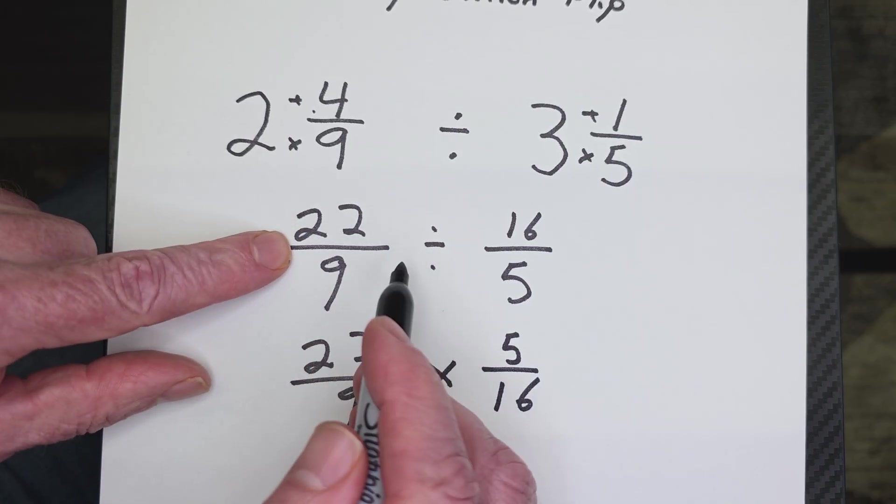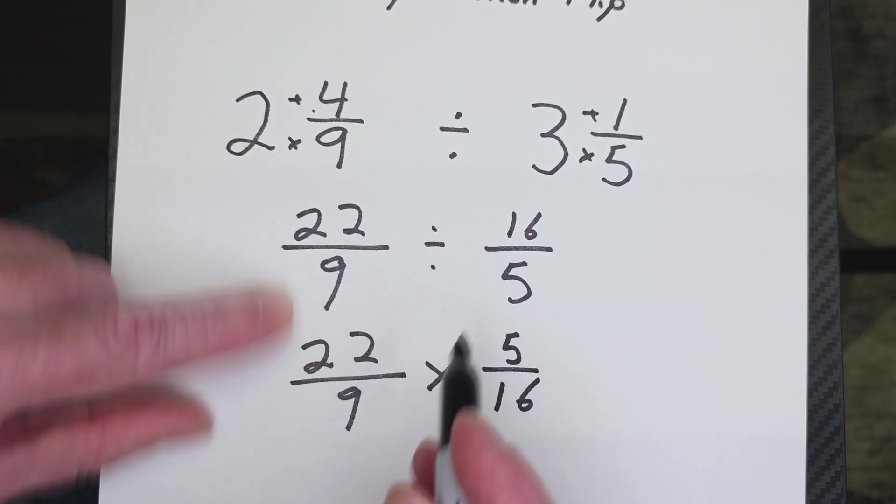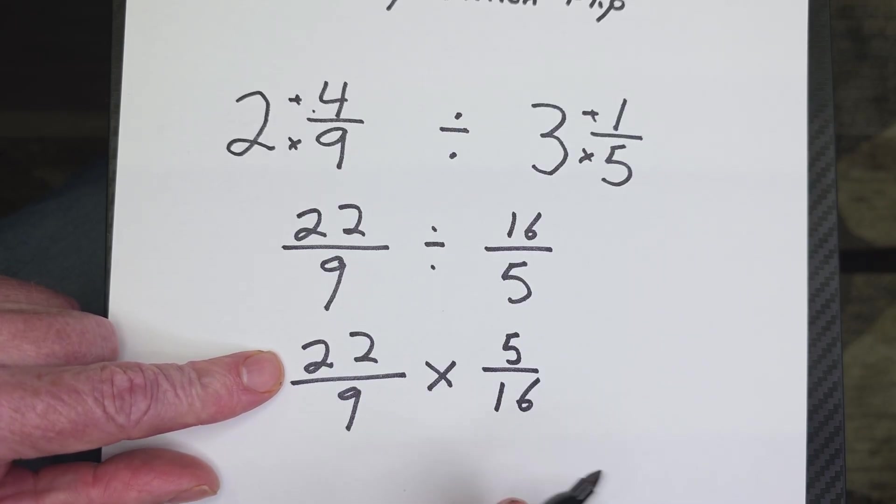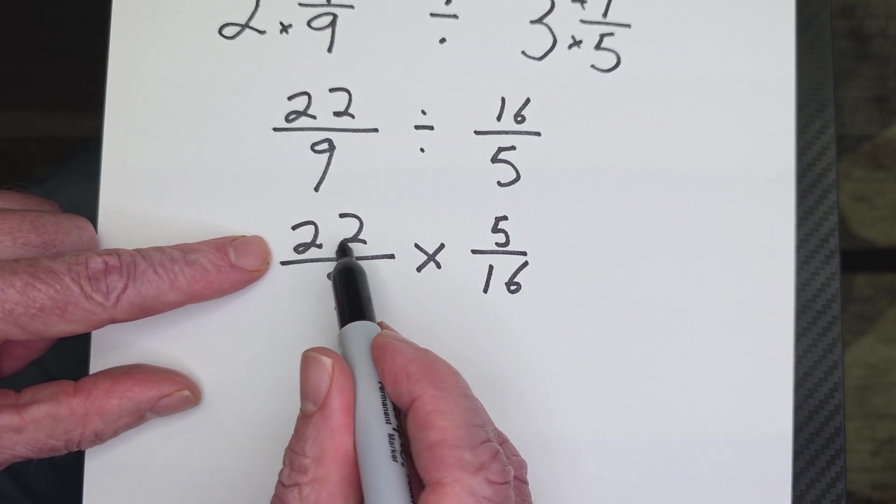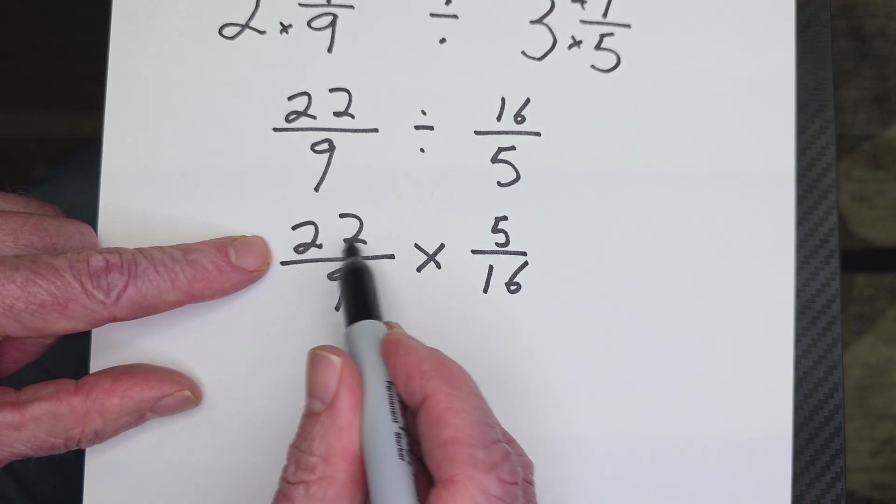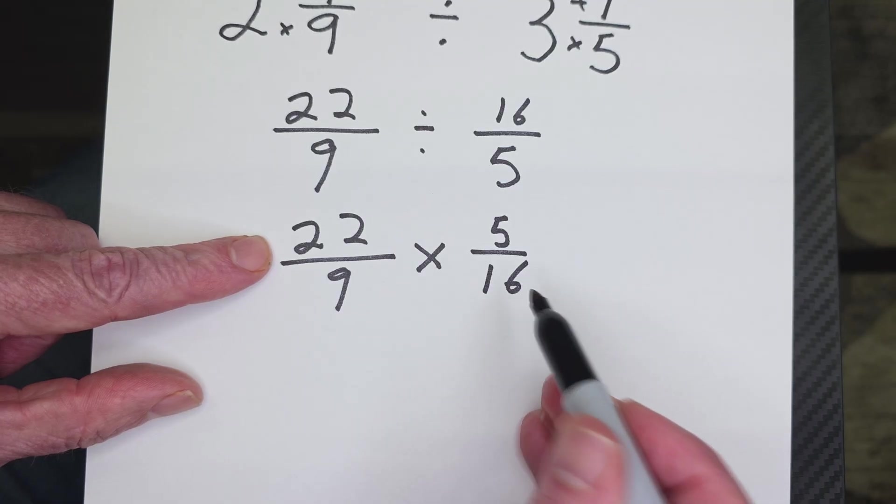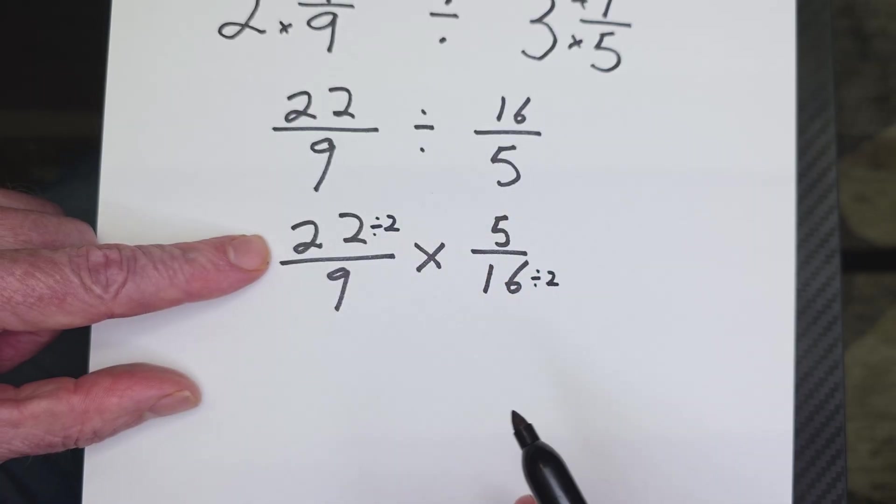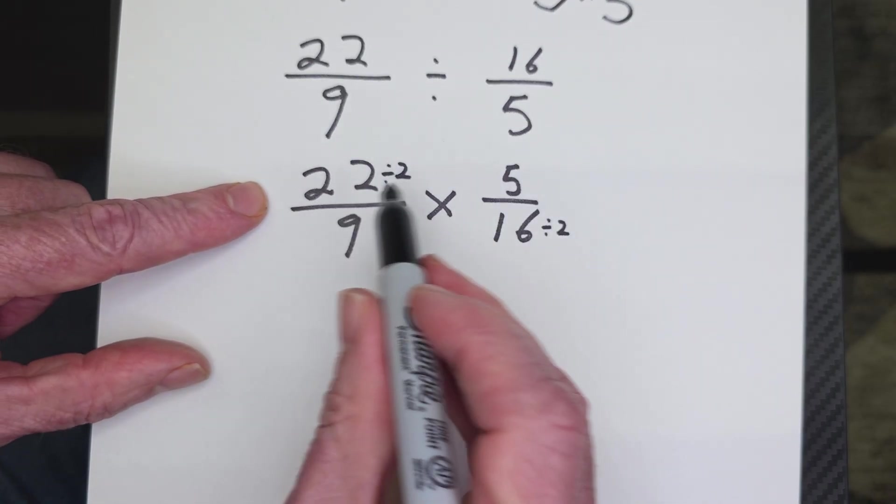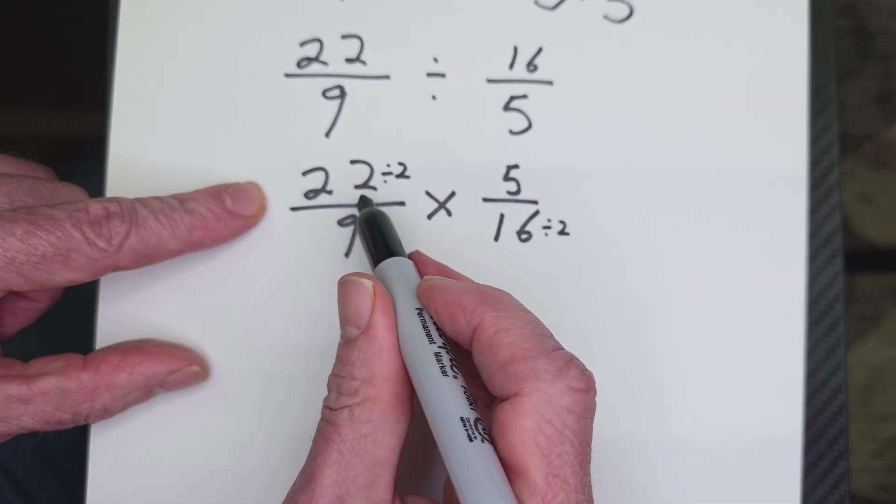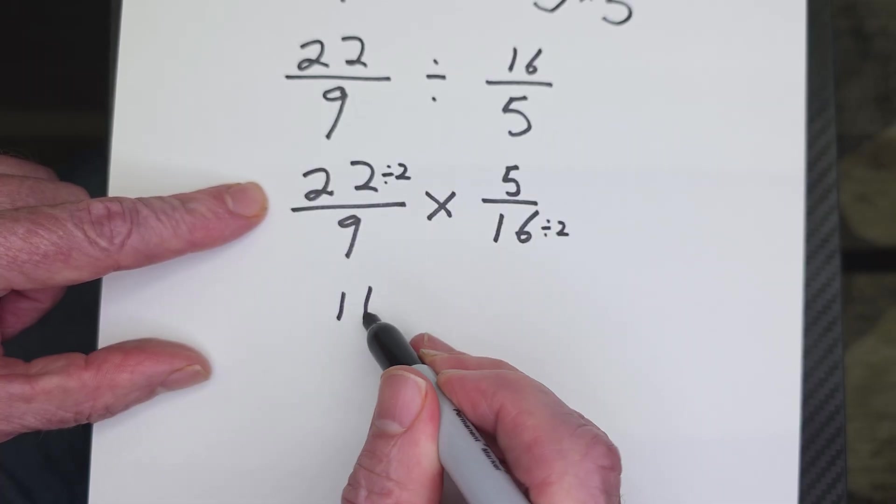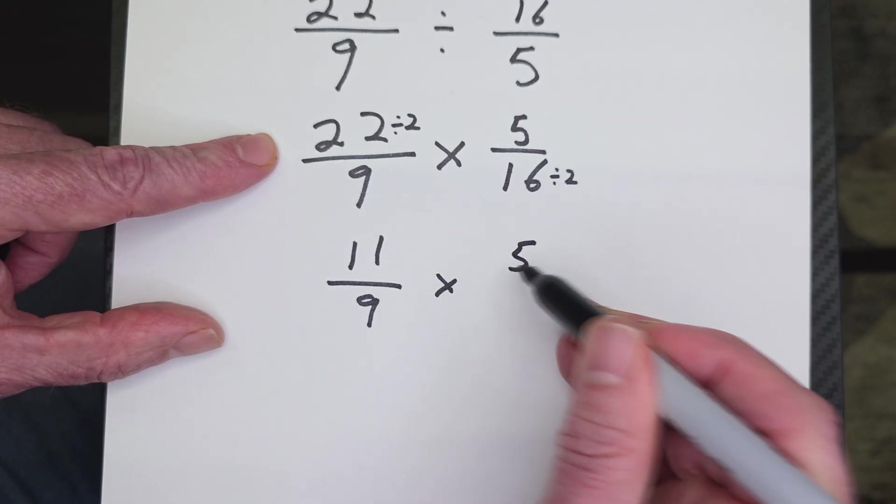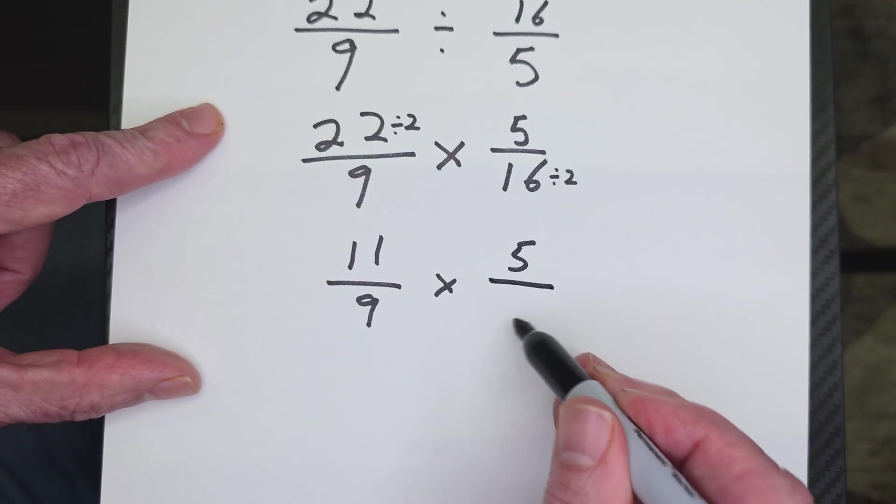After you do this, don't do it right there in this process here. After you do this, when you turn it into multiplication, then you can simplify. So can we simplify? Well, I'd notice right here that this is an even number and an even number. So I know I can divide them both by a 2. All right. I might even be able to break it down more, but let's just see what happens. So 22 divided by 2 is 11. All right. Over 9. And then 5. And then 16 divided by 2 is 8.